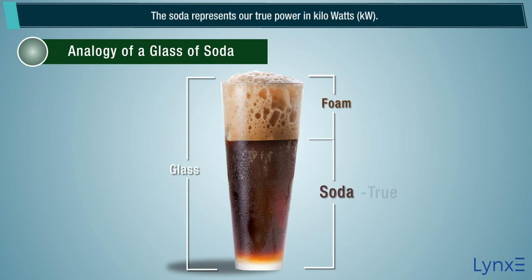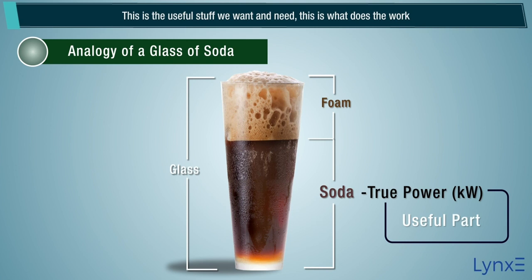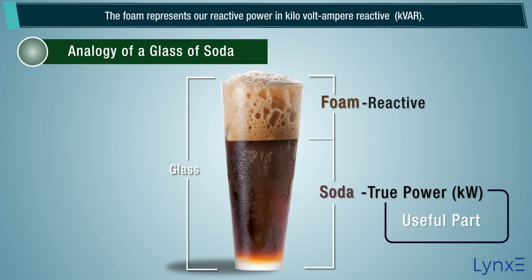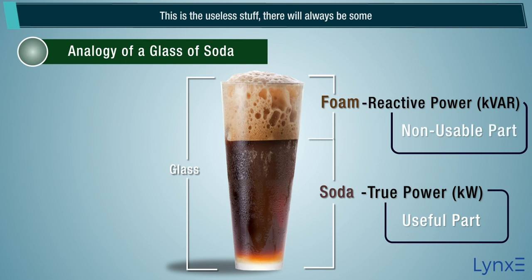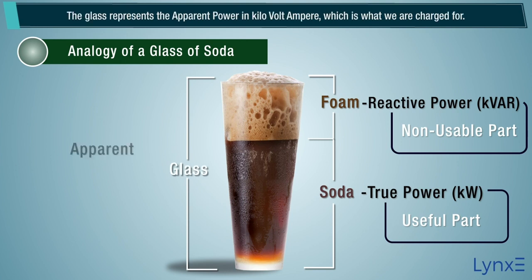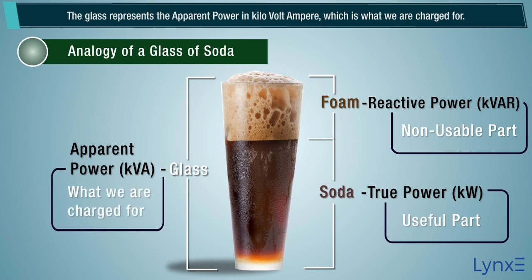The soda represents our true power in kilowatts. This is the useful stuff we want and need — this is what does the work. The foam represents our reactive power in kilovolt ampere reactive. This is the useless stuff; there will always be some, and we have to pay for it, but we can't use it, so we don't want too much of it. The glass represents the apparent power in kilovolt ampere, which is what we are charged for.